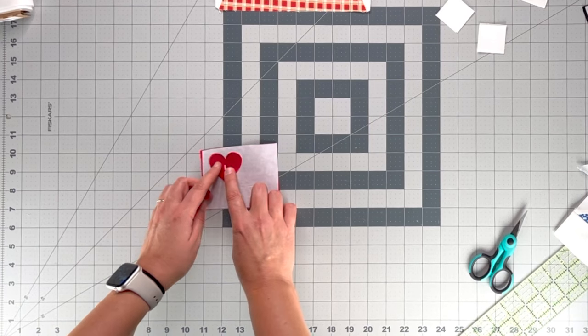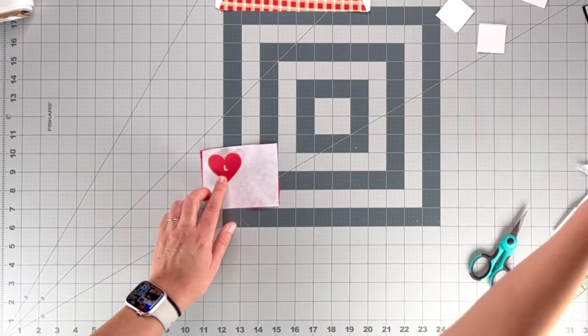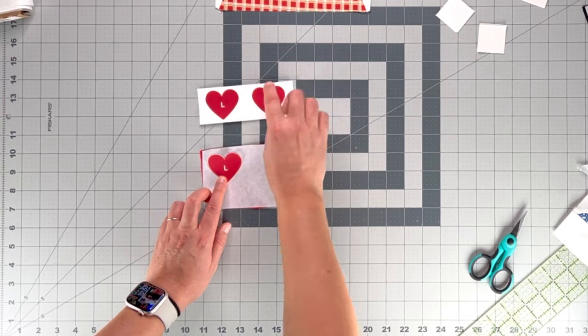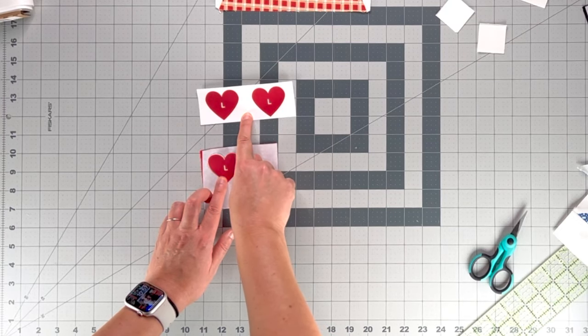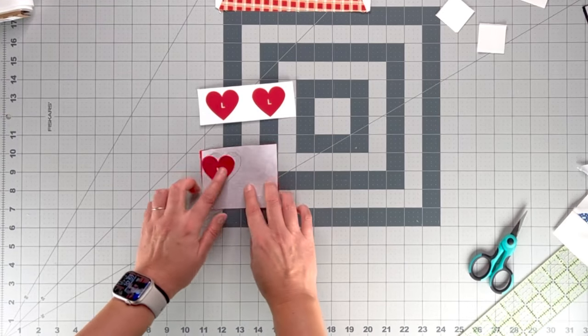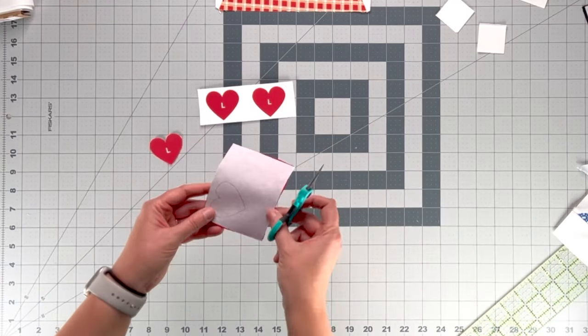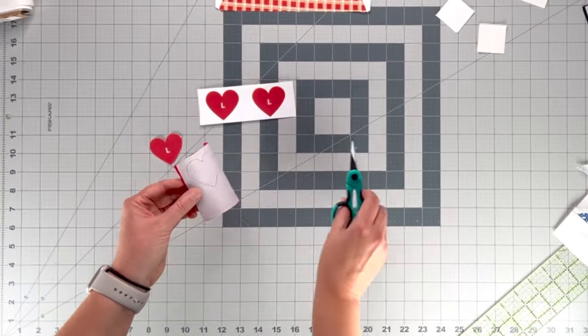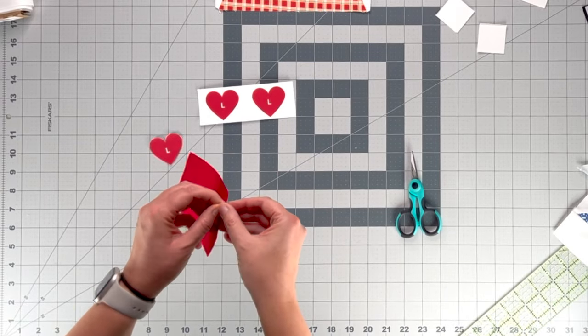But what I do is I take my template. You'll get these for the quilt in the quilt pattern. And I cut them out, and I just trace that heart. And once you cut out the heart, you peel the back off.